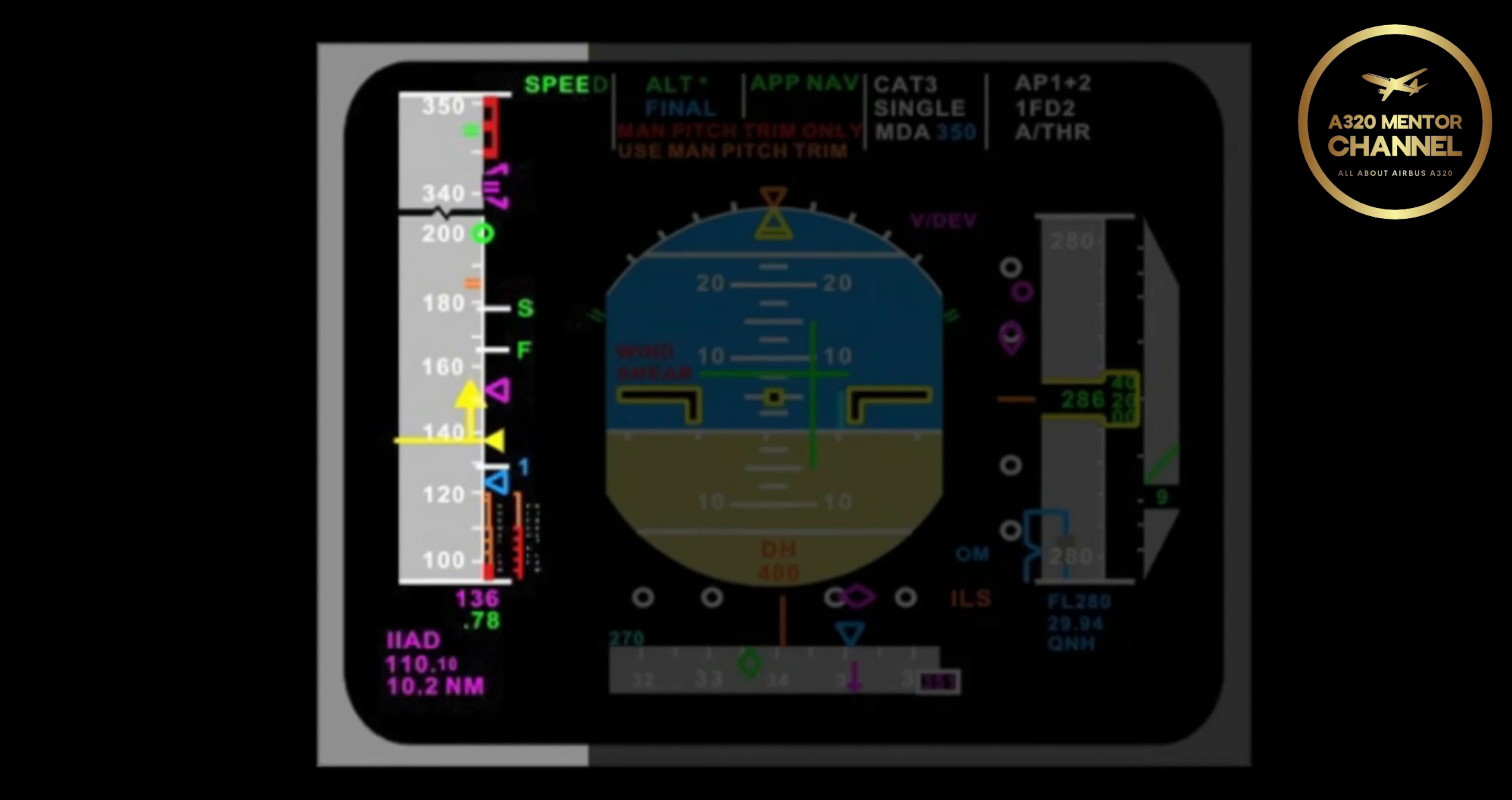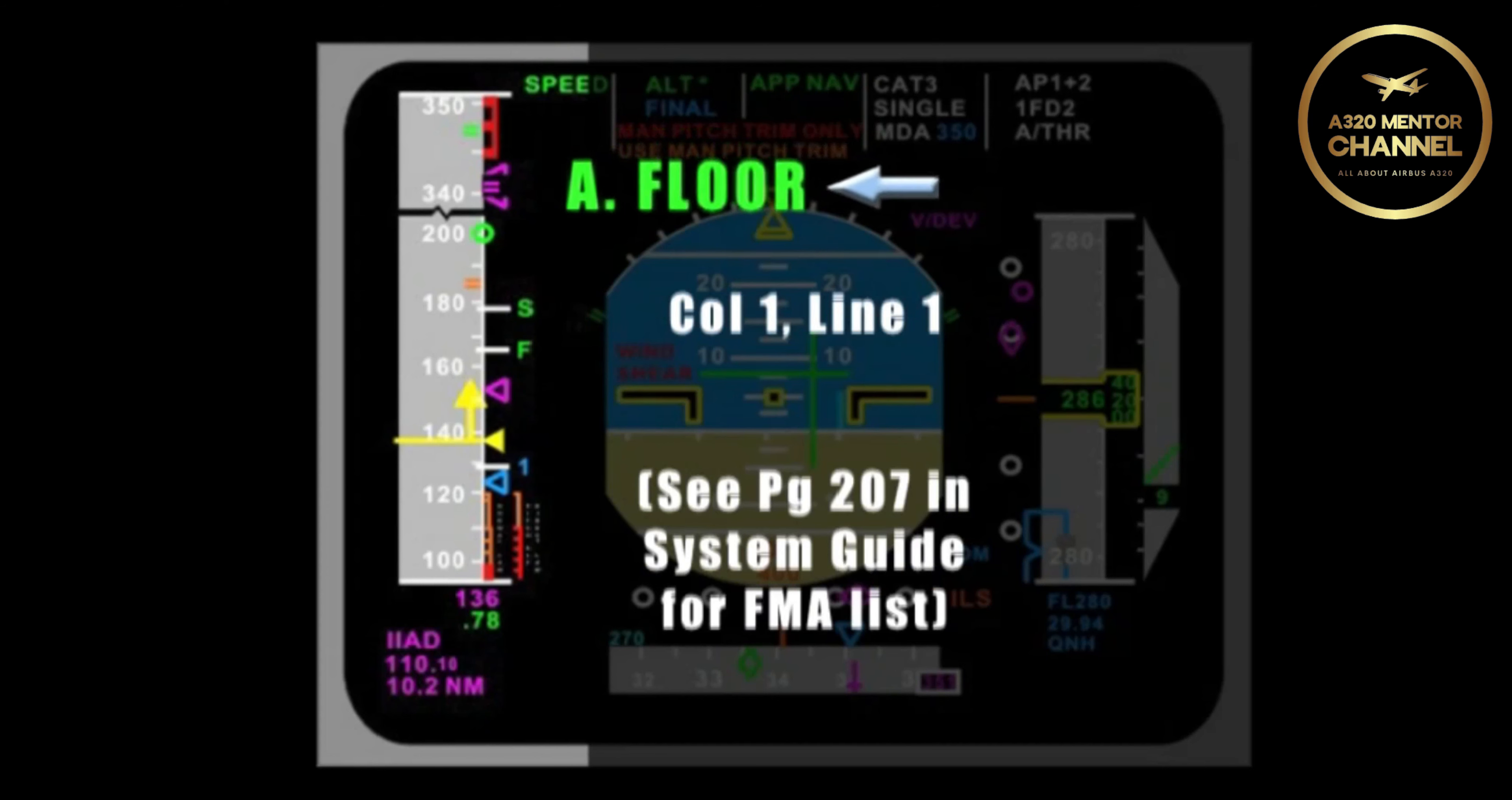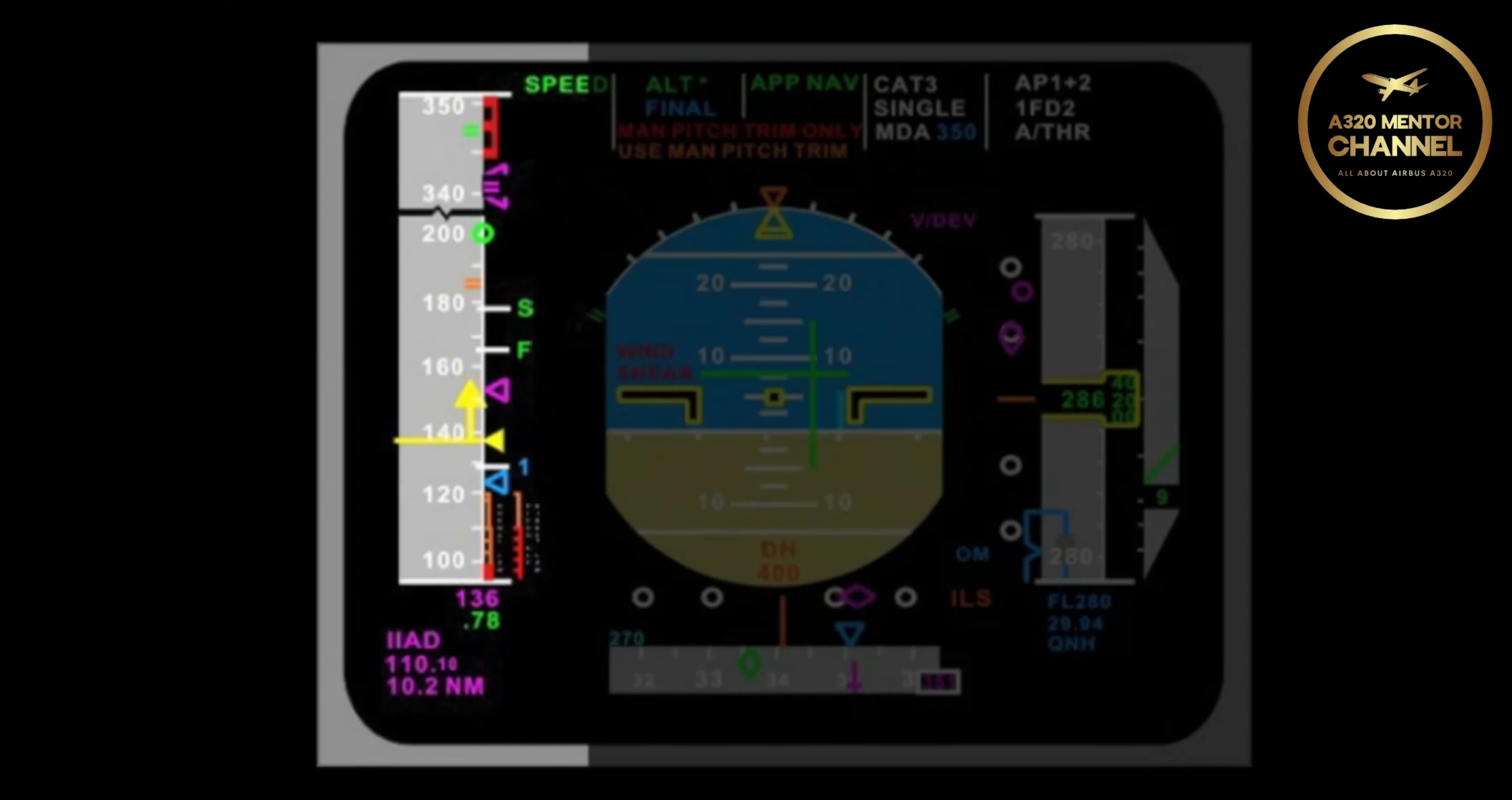Besides toga thrust, what kind of indication will you get that you are in alpha floor? You would see an FMA on the PFD in the autothrottle column that says A floor. That is the first column of the FMAs. You said the autothrottles must only be available, not necessarily engaged. To have alpha floor available, is there a time when alpha floor might be inhibited?